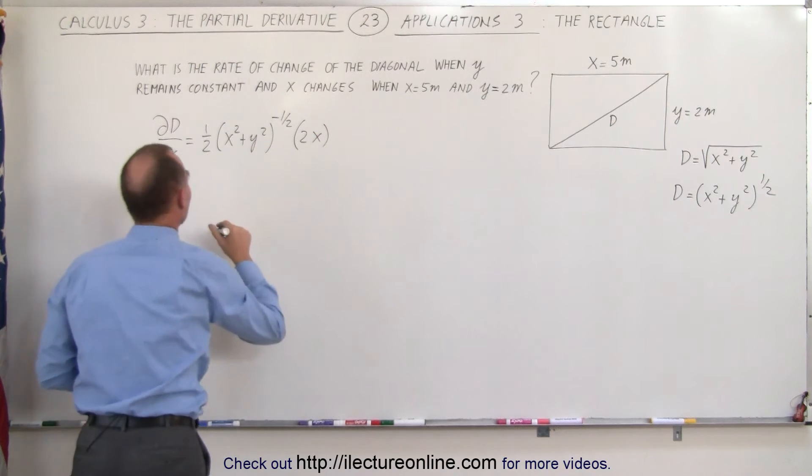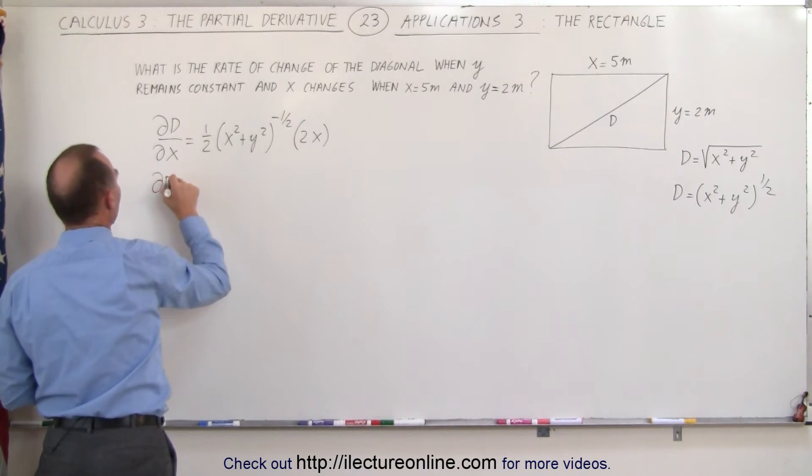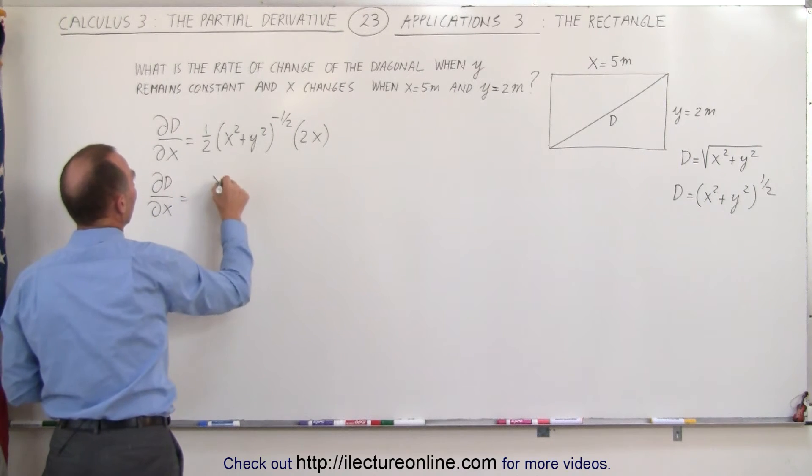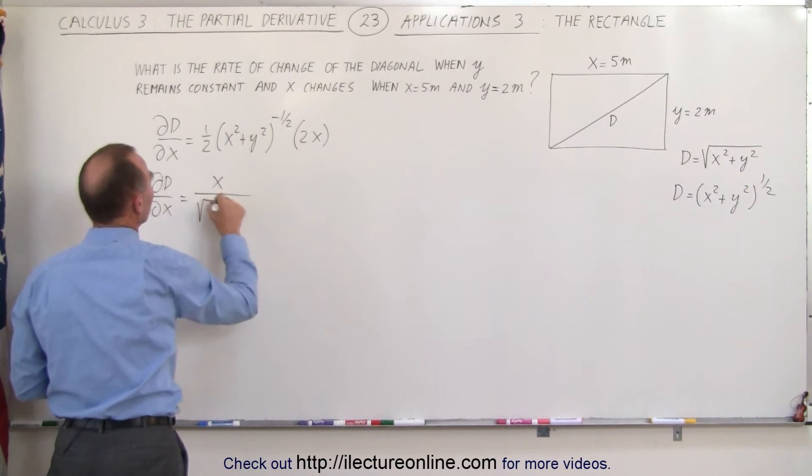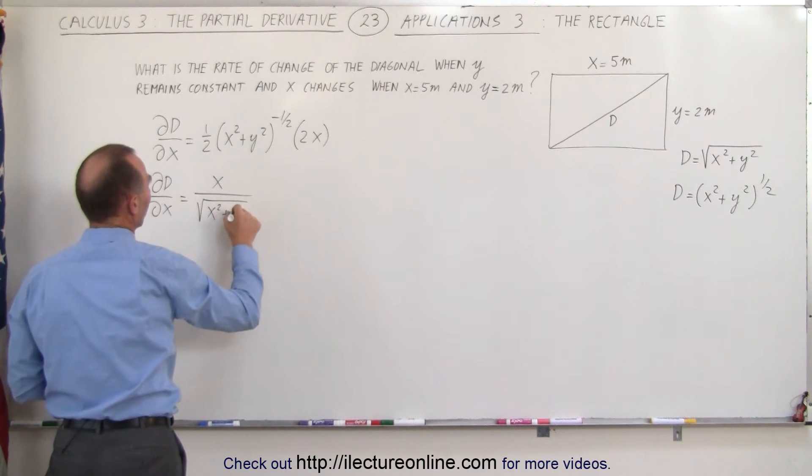Notice the 2 and the one-half cancel out, so the partial of the diagonal with respect to x is equal to x divided by the square root of x squared plus y squared.